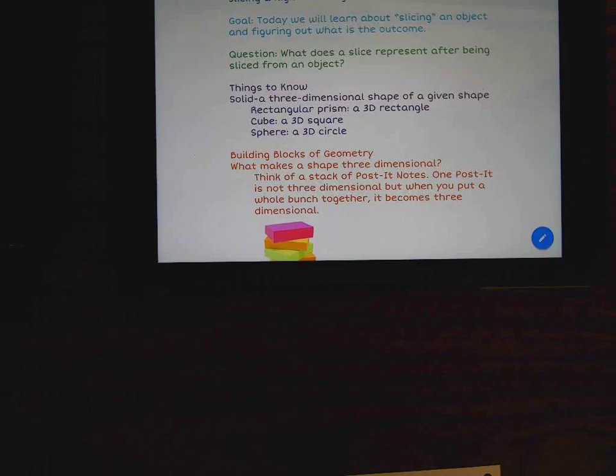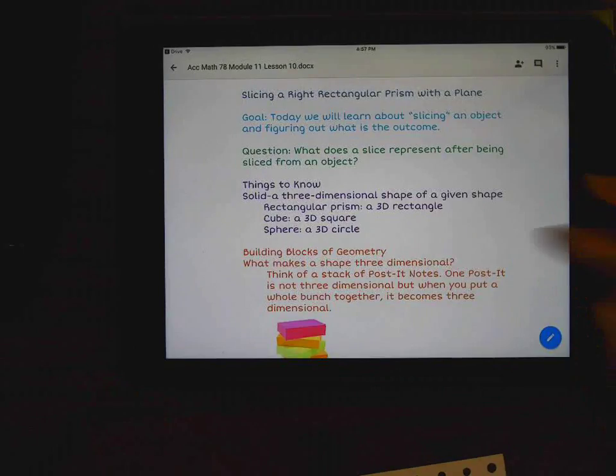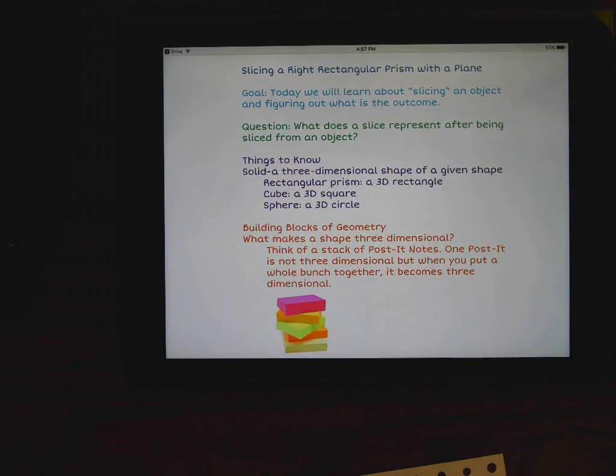So let's go back up to the top. Today we will learn about slicing an object and figuring out what is the outcome. So what do we know is the outcome when you slice a figure? Well, when you slice a figure, you're creating the plane that it was or the two-dimensional figure that it started from. The question, what does a slice represent after being sliced from an object? Hopefully you can figure that out. And then really the only way to help us understand this and figure this out is by practicing and playing with it, and that's what we'll be doing in class when we get together tomorrow. All right, my kiddos, that's all I have for today, and I will see you all tomorrow. Bye!